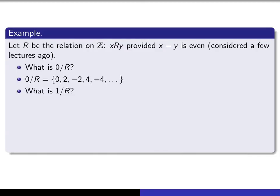What is 1 slash R? So 1 slash R is the set of all integers Y related to 1, meaning 1 minus Y is even. And since 1 is odd, the only way 1 minus Y can be even is if Y is also odd. So 1 slash R is the set of all odd integers.